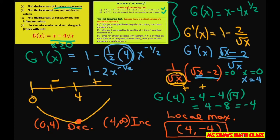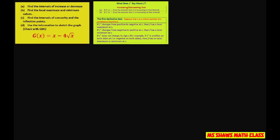Now we have to test for concavity. Our derivative is g prime of x equals 1 minus 2x to the negative one half, so now we take the second derivative.